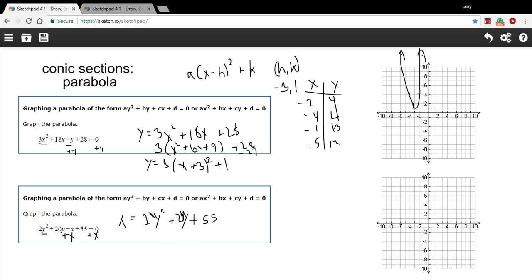I can factor out a -2 first, so -2 times (y² + 10y), and then leave room to complete the square—I got my +55. To complete the square here, I'm going to take this 10, divide it by 2, and then square that to get 25.